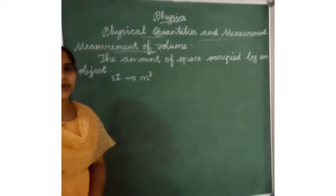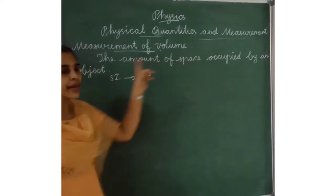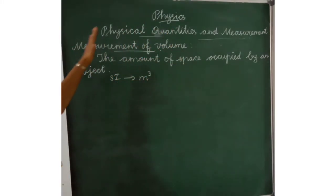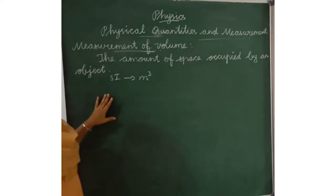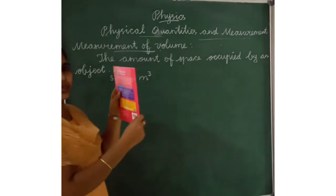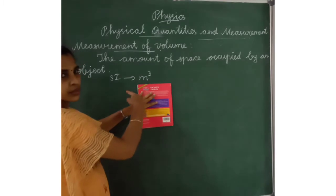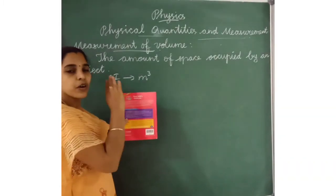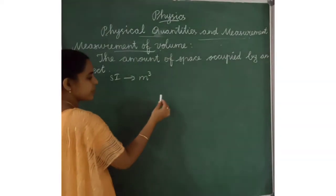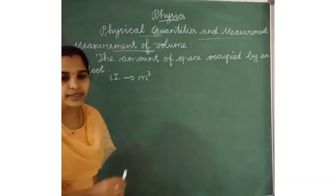Next is measurement of volume. Volume means the amount of space occupied by an object. For example, this green board is occupying space on the wall — that is its volume. When I keep this book here, the book is occupying space — that is the volume. If the object is big, the volume is more; if the object is small, the volume is less. The SI unit of volume is meter cube, which means cubic meter: length into breadth into height.